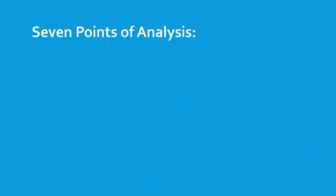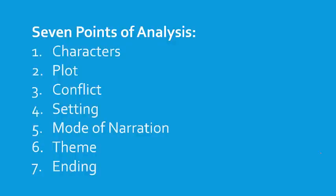We're going to look at seven points of analysis with short stories. First we have characters, then we have plot, conflict, setting, the mode of narration, the theme, and the ending. You don't have to write these down yet, but do pay attention to these as we go through the rest of this presentation.